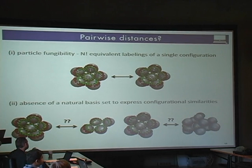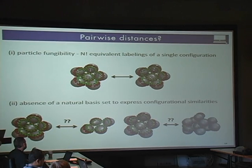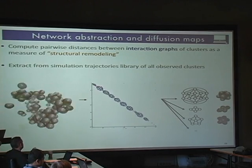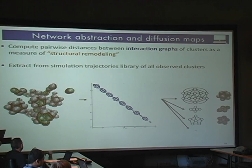The first problem is particle fungibility: there are n-factorial ways of relabeling particles without changing the state of the system — a combinatorial explosion. Second, there's no natural basis set to express configurational similarities, because particles are rotating and translating through space. We suggest defining distances in an abstract graph representation: we run the Brownian dynamics simulation, extract all clusters based on pairwise proximities — if two particles are within the Lennard-Jones well depth threshold for their sticky patches, they're in the same cluster. This gives us a graph representation of all clusters seen.